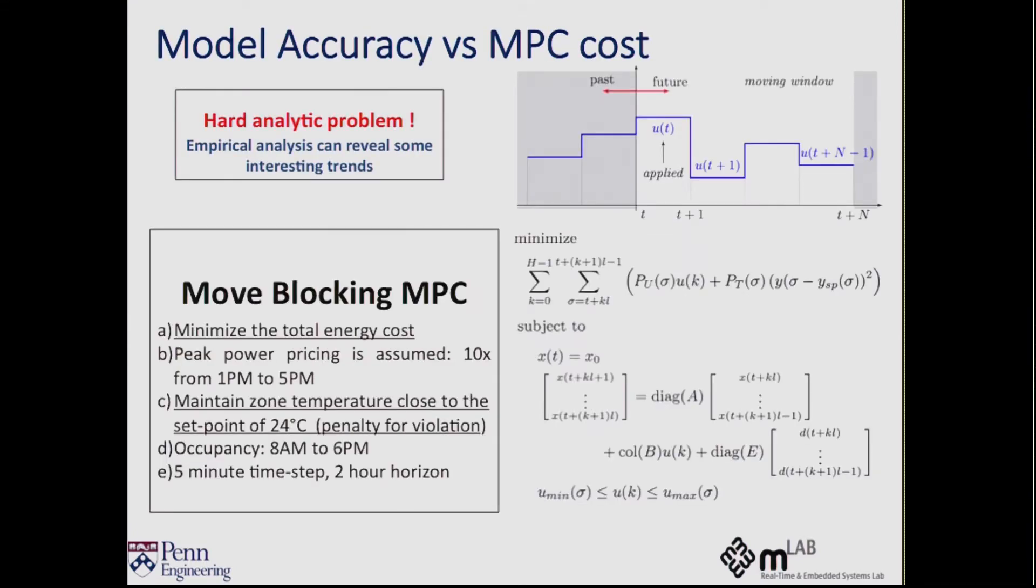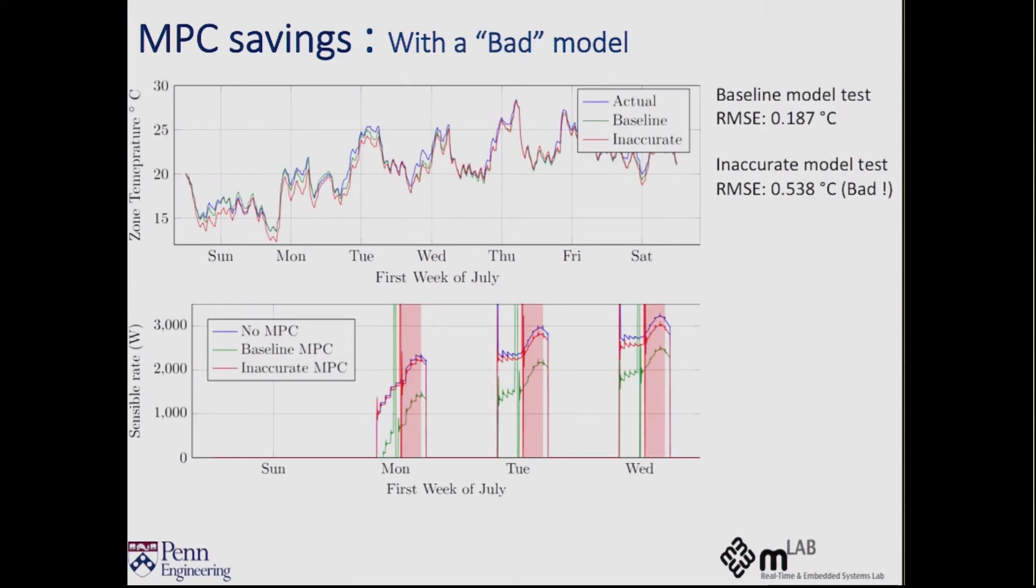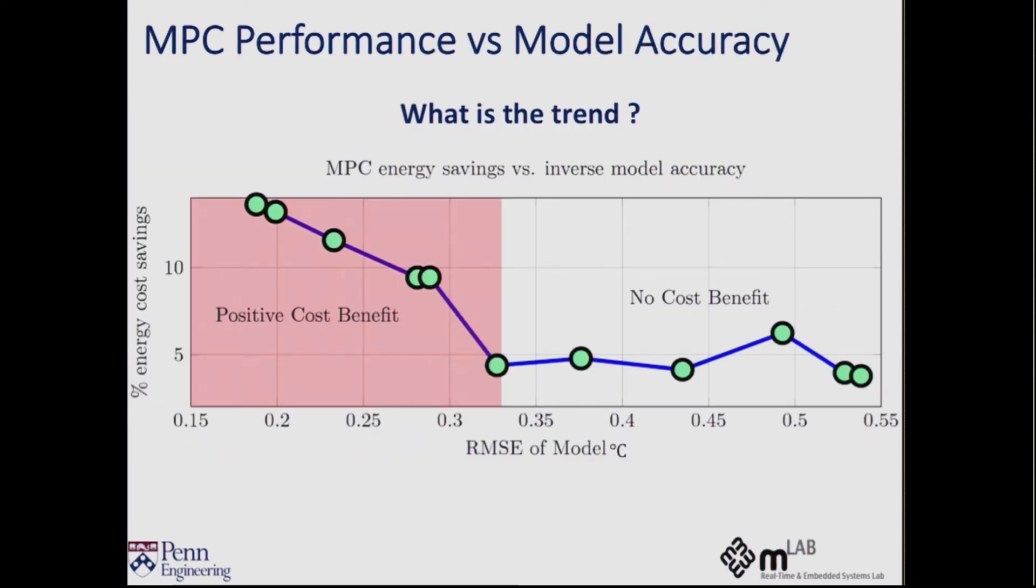So with MPC versus control performance, what we do is we do an empirical analysis in which the same model structure is used to implement a model predictive controller, in which the whole idea is that you want to minimize the total energy subject to some temperature comfort that you want to maintain with the model that you have learned. So it's very easy to implement in MATLAB. And what we do is you implement MPC first on the baseline model, which has a high accuracy and was trained on the original data with no uncertainty or whatever the regular data was. And it works well. You get about maybe 14% reduction in cost. And this reduction is happening because you're pre-cooling during peak hours. And then you deliberately give MPC a bad model, which has high accuracy, to throw it off. And you see that it does get thrown off and the energy savings you get decreased. So this is very intuitive. This is going to happen. But what we want to reveal is the trend.